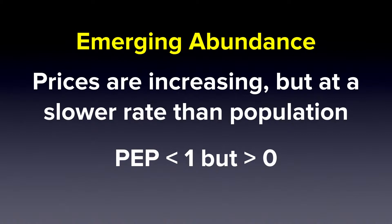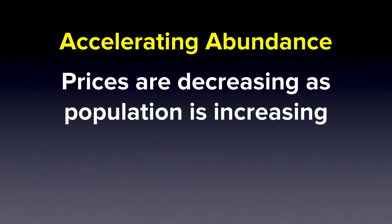Accelerating abundance occurs when prices begin to decrease as population is increasing. The PEP in this situation will be less than zero.